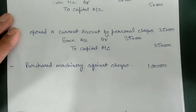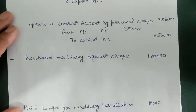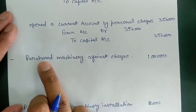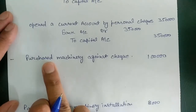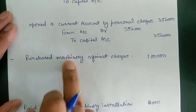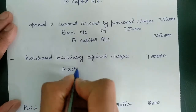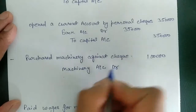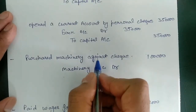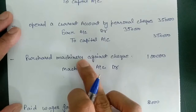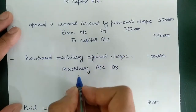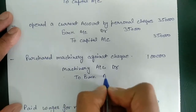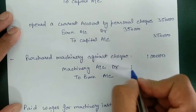The next entry is purchase of machinery against a check. The business got machinery — whatever we purchase we debit. We purchased machinery so we debit machinery account. But the business did not pay cash; he paid by check, so we credit bank account for 1 lakh.